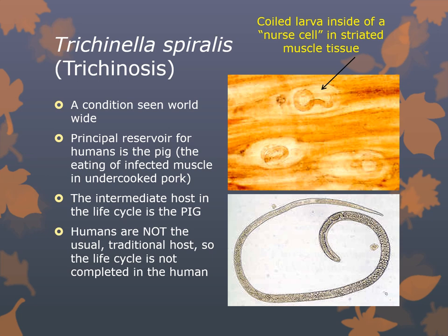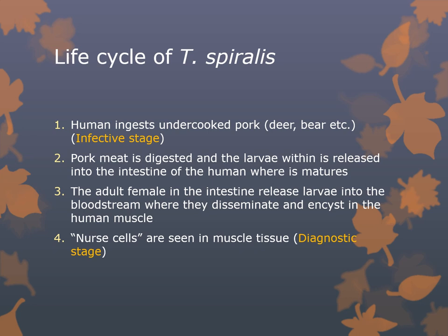You would diagnose Trichinella by looking at muscle tissue and identifying the nurse cell. In the life cycle, the human ingests undercooked pork, deer, or bear — that's the infective stage. The meat is digested, releasing larvae into the intestines where they mature. The adult female releases larvae into the bloodstream, which disseminate and encyst in human muscle. Nurse cells in muscle tissue are the diagnostic stage. Symptoms of trichinosis include deep muscle pain, diarrhea, difficulties with fine motor skills like talking or walking, and painful eye movement.